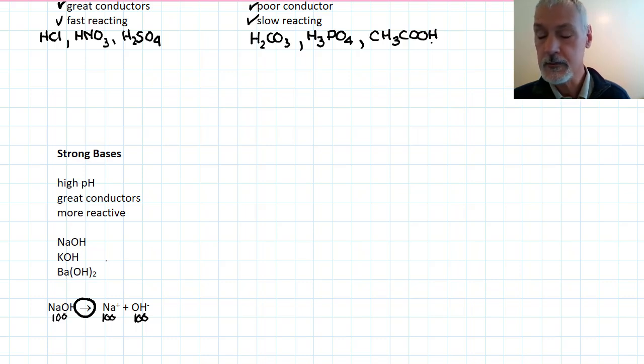Examples include sodium hydroxide, potassium hydroxide, barium hydroxide, and most hydroxides can be viewed as strong bases.